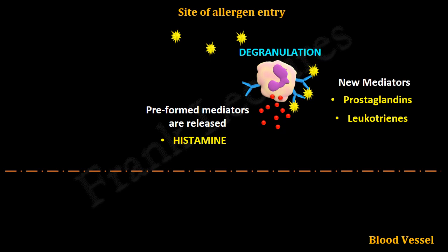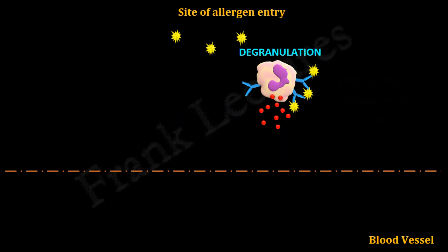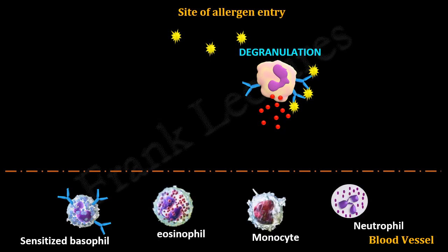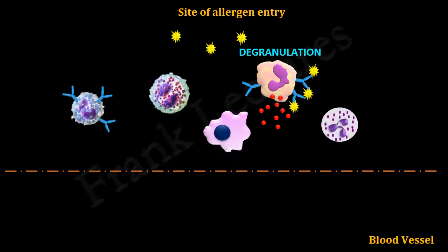Mast cells also synthesize and release cytokines and chemokines, which play an important role in the late-phase reactions. Late-phase reactions are characterized by the accumulation of neutrophils, eosinophils, and macrophages. Leukocytes such as sensitized basophils, eosinophils, macrophages, and neutrophils present in circulation start migrating to the site where the allergen is present, in response to chemotactic factors released during the early-phase reaction. These leukocytes get activated and carry out destructive effector functions. Their activation is due to the cytokines secreted by activated T helper type 2 cells and mast cells present at the site.